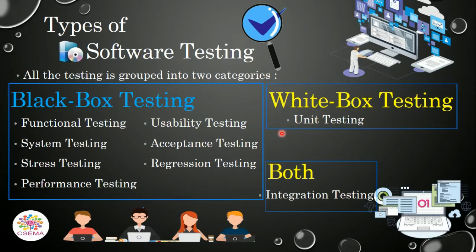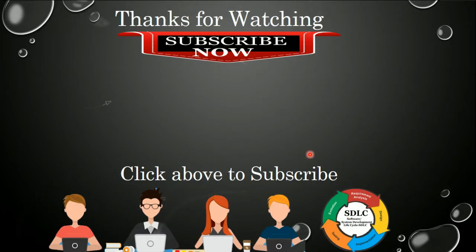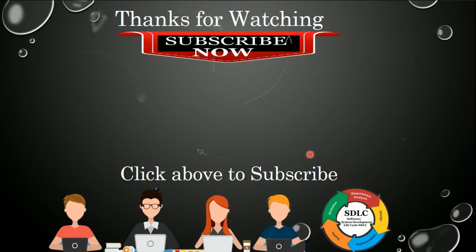When black box testing and white box testing are combined together to perform any kind of testing, it becomes integration testing — where the tester has all information about both the internal and external behavior of the software. In this video, we have learned the different kinds of software testing types and the principles of testing. Please subscribe to CSCMA and thanks for watching.